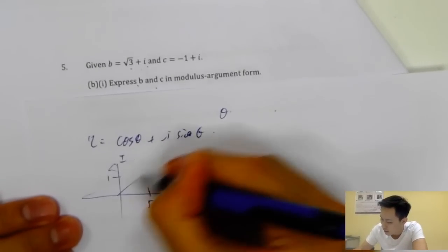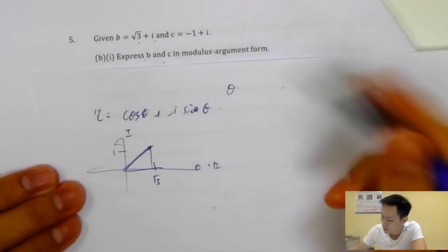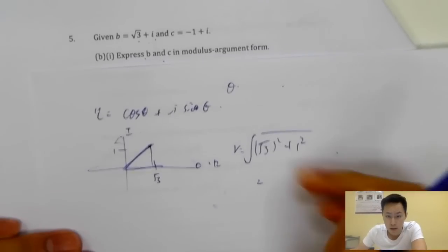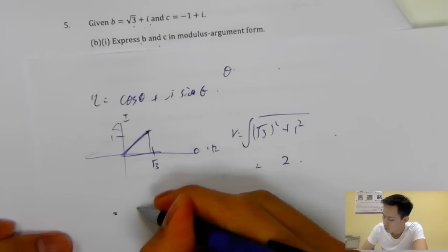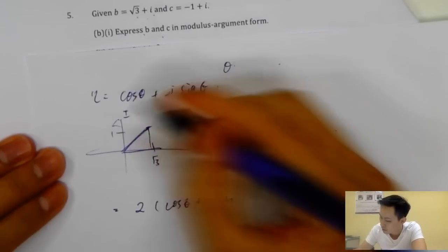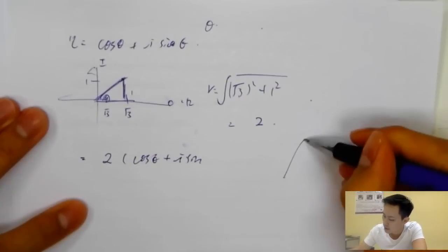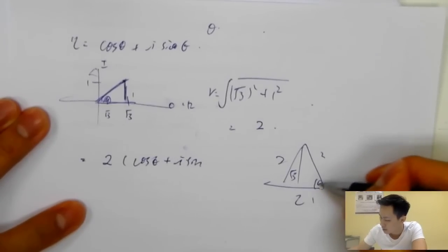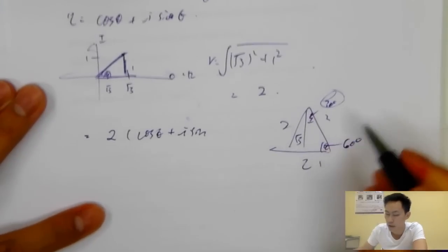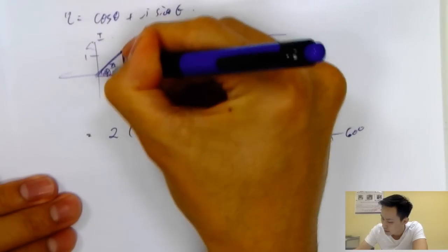For B: the real part is root three and the imaginary part is one. First find the modulus: r equals the square root of (root three)^2 plus 1^2, which equals two. For the angle, recognizing the special triangle with sides one and root three, the angle is 30 degrees, which is pi over six. So B equals 2(cos(pi/6) plus i sin(pi/6)).